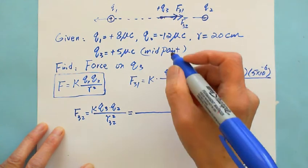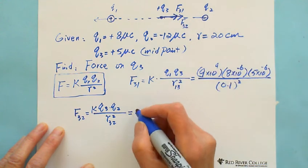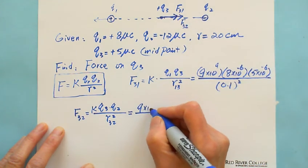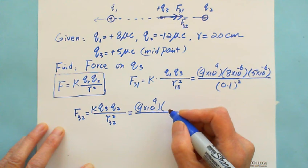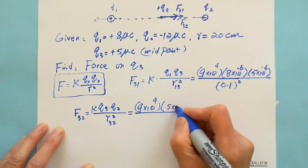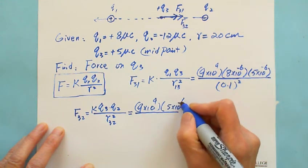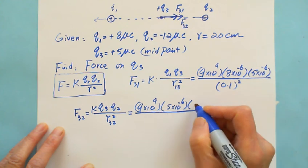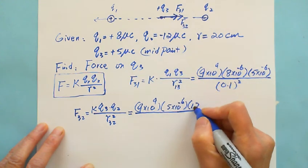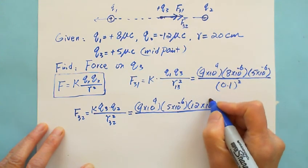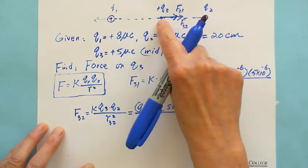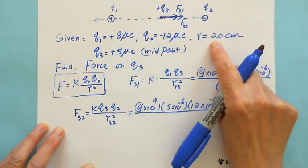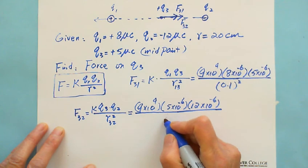And the force between Q3 and Q2: 9 times 10 to the 9. Q3 is 5 times 10 to the negative 6. Multiply Q2 is 12 times 10 to the negative 6. The distance between Q3 and Q2 is also the midpoint which is 10 cm, 0.1 squared.